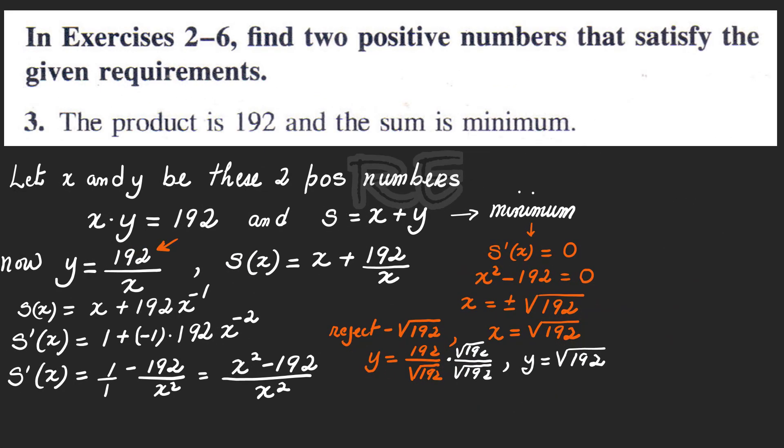So in conclusion, these two numbers are square root of 192 and square root of 192.